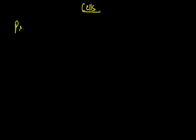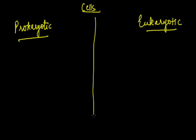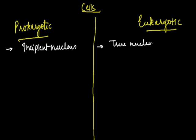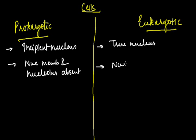Cells can be distinguished on the basis of the type of organization present. They can be called prokaryotic cells or eukaryotic cells. Prokaryotic cells consist of an incipient nucleus, whereas eukaryotic cells have a true nucleus. Nuclear membrane and nucleolus are absent in prokaryotic cells, but present in eukaryotic cells.